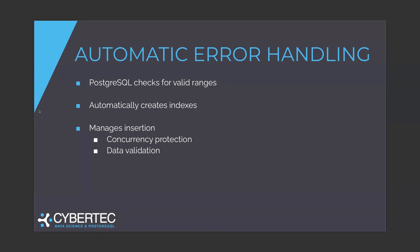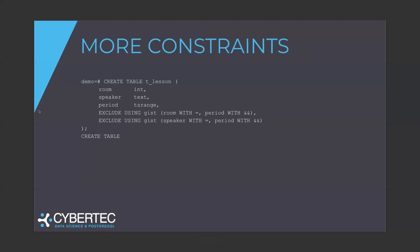But there is a bit more. Let's look at a more complicated example. Assume we have a room, a speaker, and a range. We have two things to assure: we must not overbook the room — so again, room with equals, period with overlaps — but also, we want to assure that the same speaker is not allowed to speak at two conferences at the same time. So we add a second EXCLUDE USING GIST clause: speaker with equals, period with overlaps. Postgres will make sure that the room is not overbooked, but also that the speaker is not overbooked. You can have many, many clauses here, and it's again super easy to use.